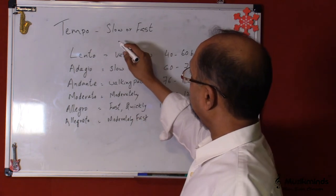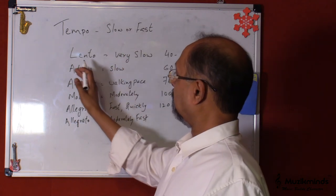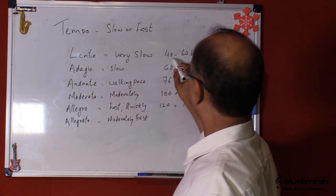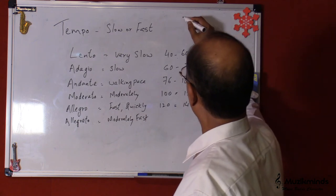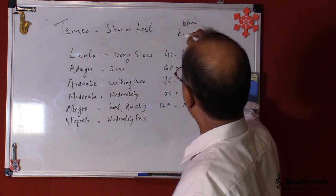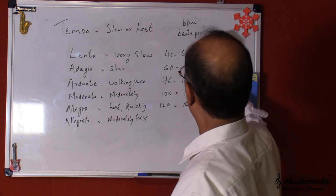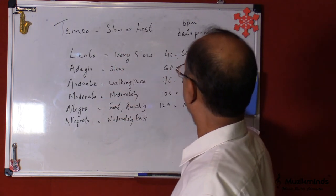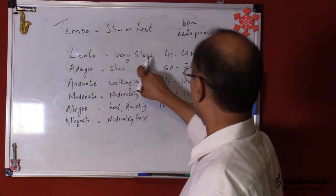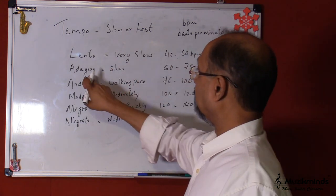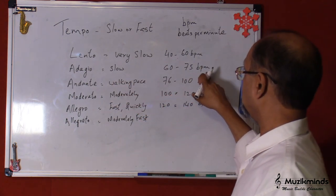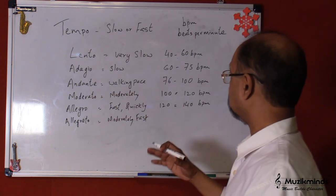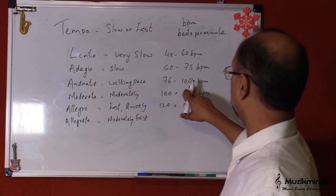Now the speed of a song, there are certain names which have been given for this. Lento means very slowly, which means 40 to 60 BPM. Now BPM means beats per minute. So the speed of it would be in terms of beats per minute. So Lento would mean very slowly, which is 40 to 60 BPM. Then Adagio is slow, which is around 60 to 75 BPM. Then we have Andante, which is in walking pace. That means it's not very slow, not very fast. It's 76 to 100 BPM.